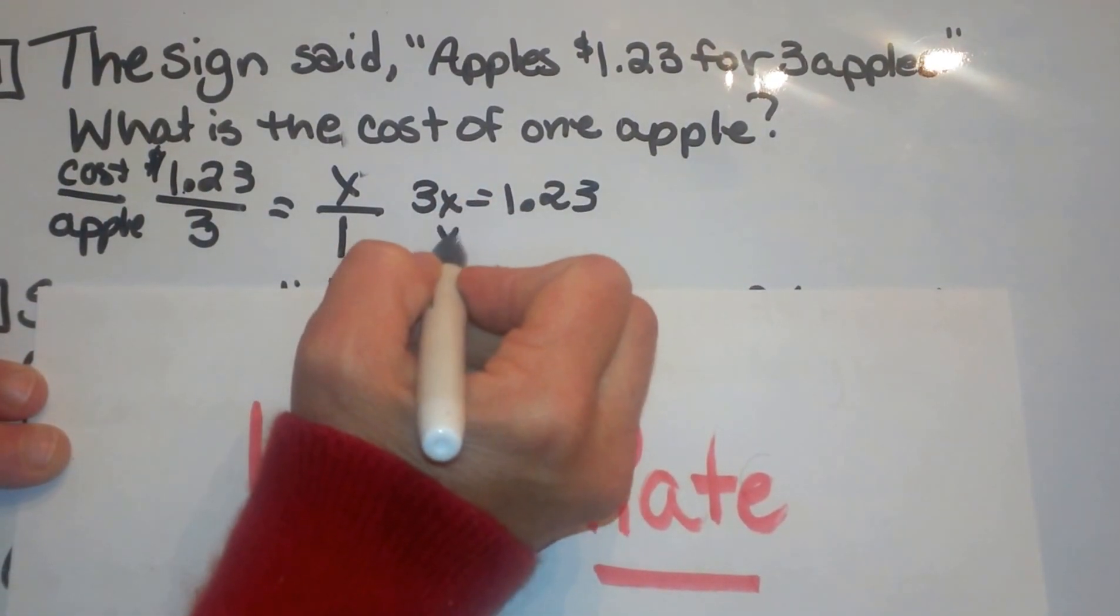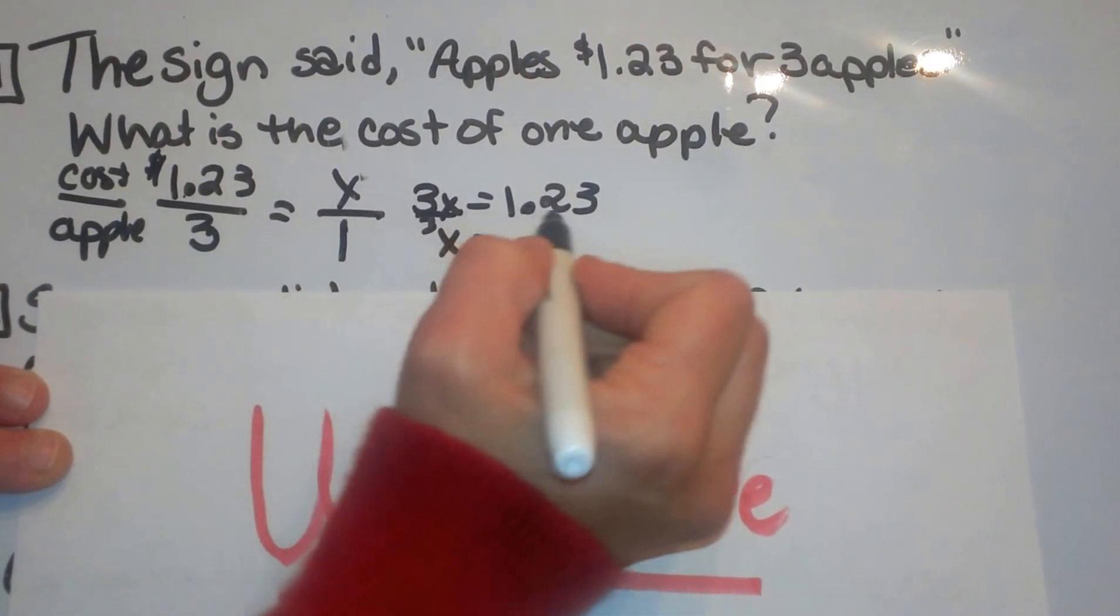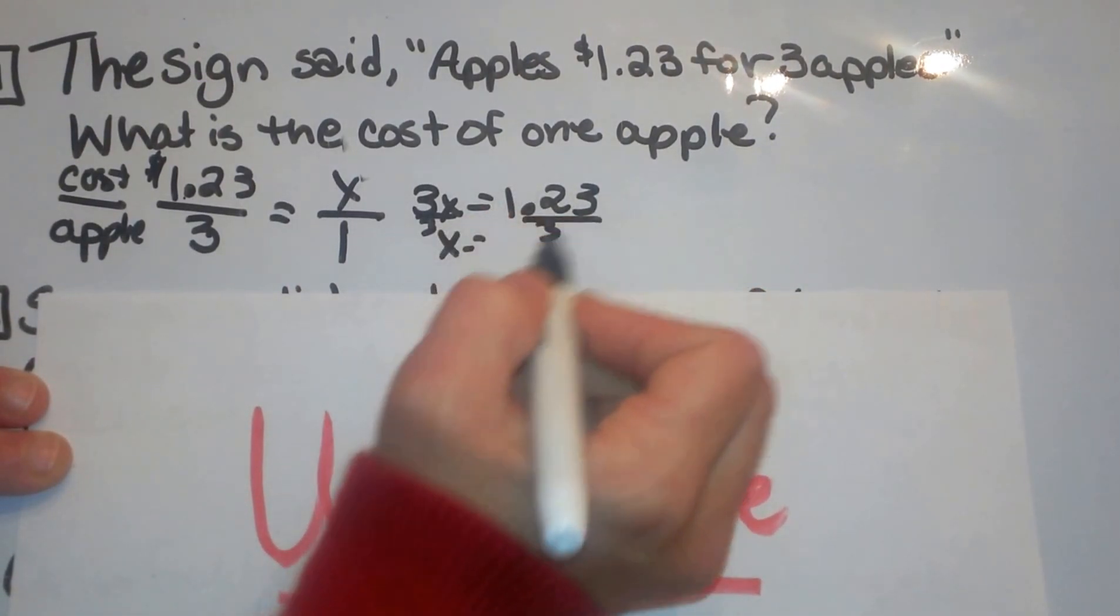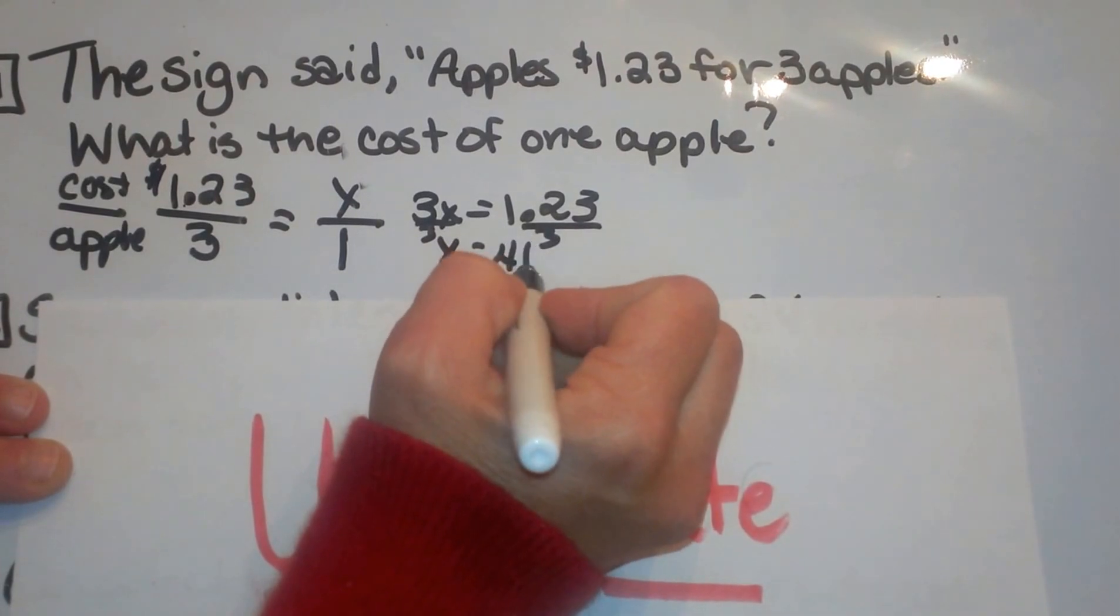So we end up having to divide both sides by three. So three goes into 123, 41 times.